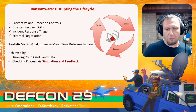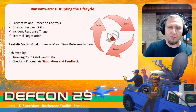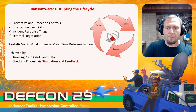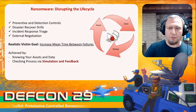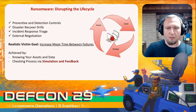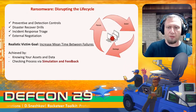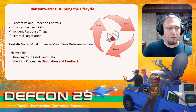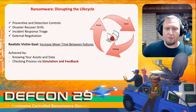Traditionally, we need to maintain preventative and detection controls because ransomware is just another variation of an offensive on your network. You absolutely need to go across teams for disaster recovery drills and incident response triage. One more thing is to add external negotiation with the ransomware party as part of your tabletop exercises. The Racketeer tooling is attempting to emulate the path and lifecycle of ransomware and allow teams to get in the middle of that.